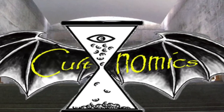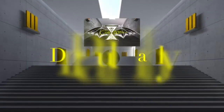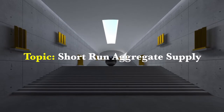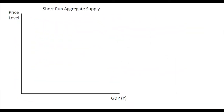Hi guys and welcome to Cultnomics. My name is Paul Hanley and today I'm going to be chatting to you about short run aggregate supply. In this video we're going to deal with short run aggregate supply and how supplying the economy relates to the price level on an aggregate level. The short run aggregate supply is the total amount of output produced by firms in the economy, and we look at its relationship to the general price level on this graph here.